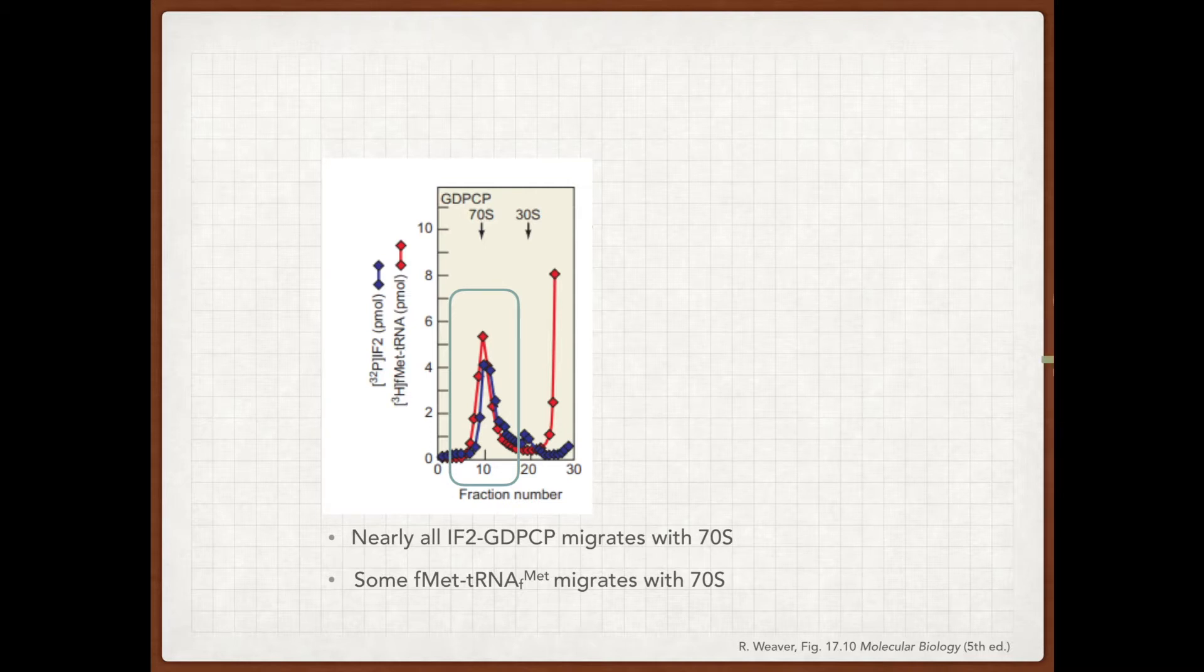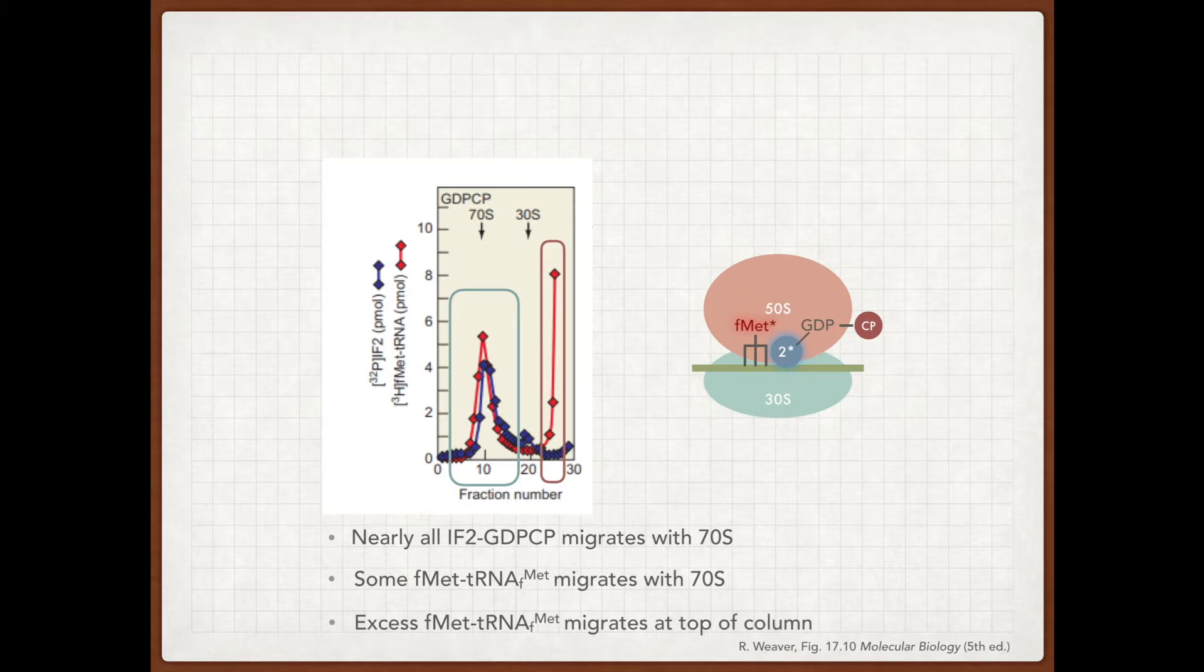This means we're having a species that looks something like this migrating in our column, where we have both the FMET-tRNA and the GDPCP-bound IF2 migrating along with the full 70S complex. But you'll also notice near the right end of this graph that we have all this excess FMET-tRNA migrating near the top of the column.